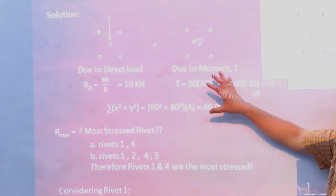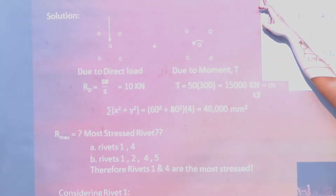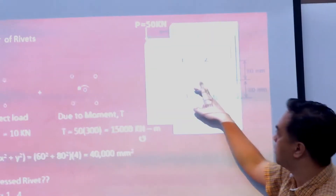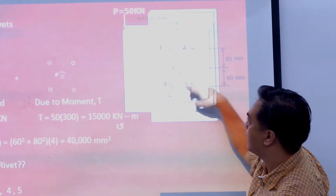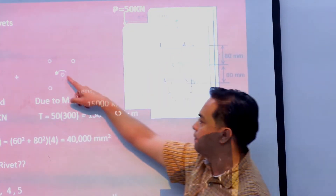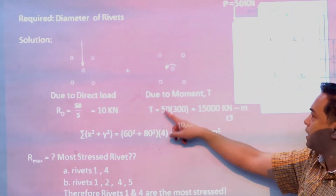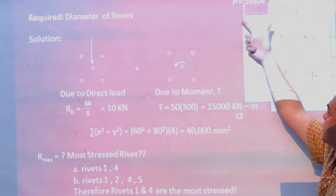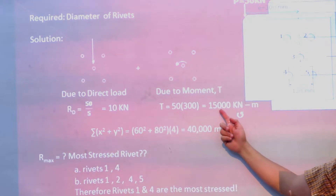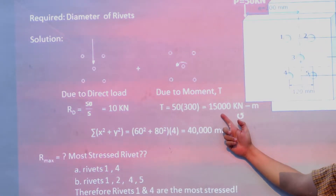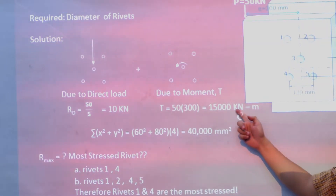For the moment: the load is applied away from the center, so the direction of the moment would be clockwise. The magnitude of the moment would be 50 kilonewtons times a distance of 300 mm, which gives 15,000 kilonewton-millimeters. The direction is clockwise.